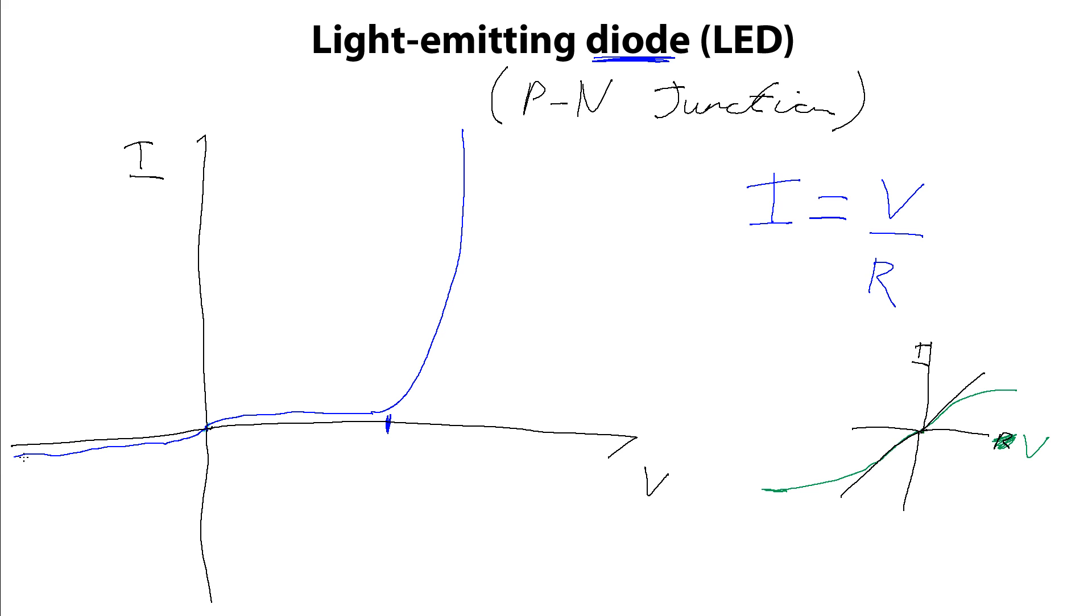Here this diode allows the current to flow one way but the other way we get nothing. If we do apply a sufficiently large voltage eventually we do have current flowing over here. And that we call a breakdown voltage and essentially that effectively means we've broken the LED, or the diode if it's not a light emitting diode. But that voltage however far over here it is is going to be much larger in magnitude than this voltage here.